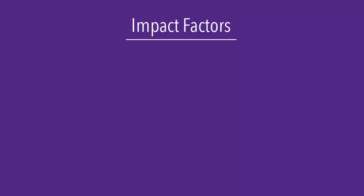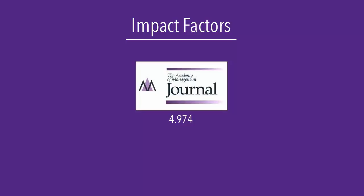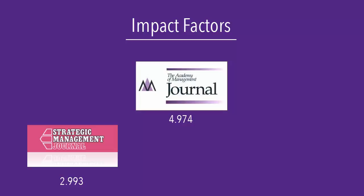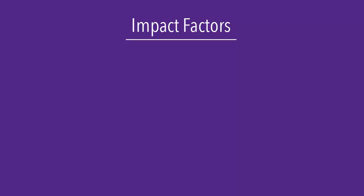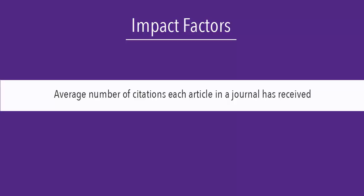A journal's impact factor is intended to convey the importance of a particular journal within a given field of study. The impact factor is based on the average number of citations each article in a journal has received.